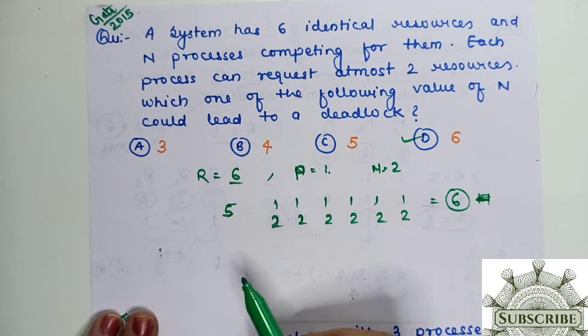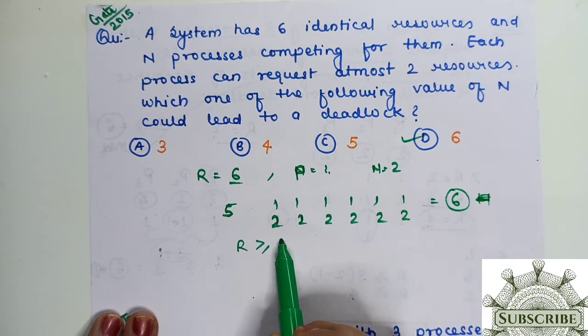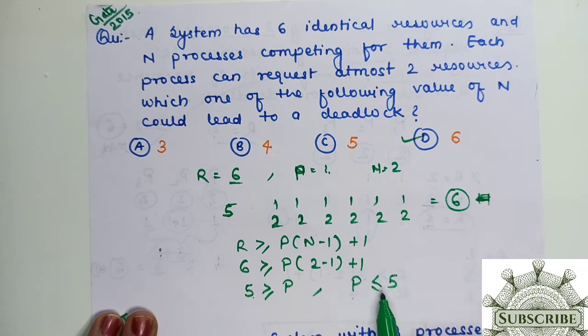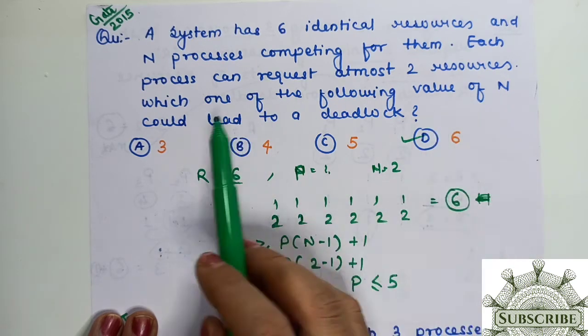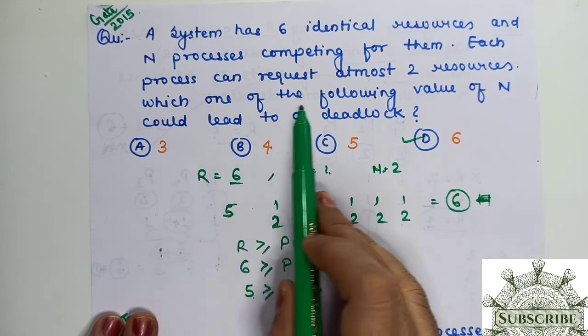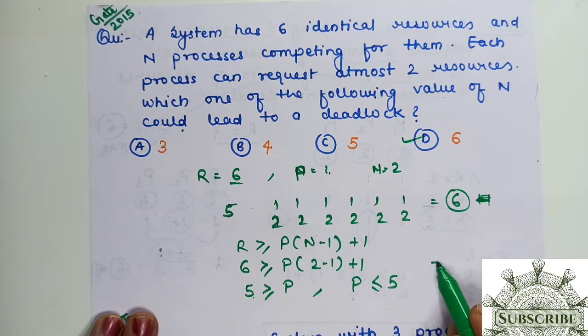If you put the same thing in the formula, which one of the following value of n could lead to a deadlock? Just opposite is being asked. R is 6, P we don't know, 2 minus 1, this becomes 5, greater than or equal to P. P ki value could be less than or equal to 5, so you may avoid deadlock. But here it's asking which value could lead to deadlock. If P is more than 5, then deadlock will occur. So the answer is 6.